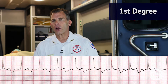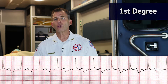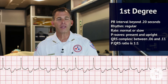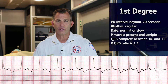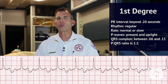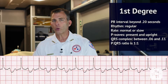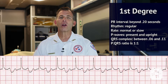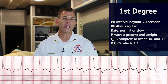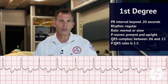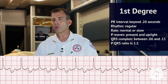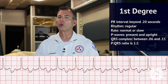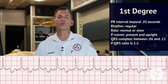First degree AV block is described by a prolonged P to R interval beyond 0.20 seconds. The rhythm is regular with a normal or slow rate. P waves are present and upright with a P to R interval greater than 0.20 seconds. The QRS complex is between 0.06 and 0.11 seconds and the P wave to QRS ratio is 1 to 1.